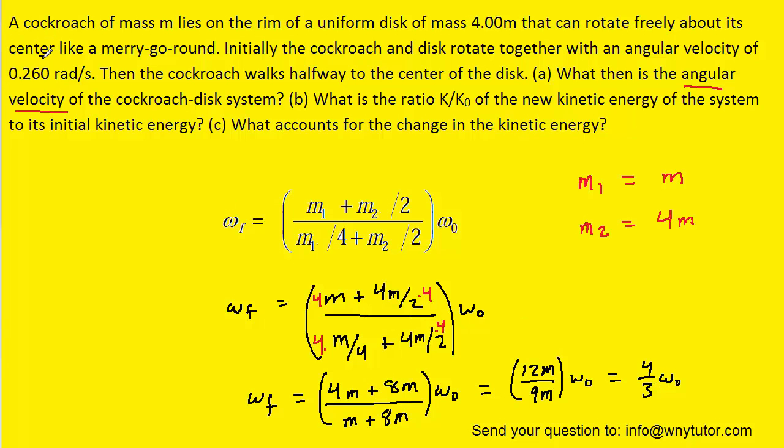That initial angular velocity was given to us in the question, so we can just plug in now. And when we simplify that, we get a value of approximately 0.347 radians per second. So, that would be the new angular velocity after the cockroach moves towards the center.